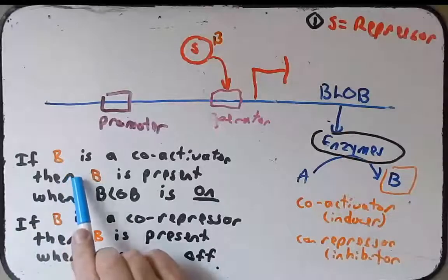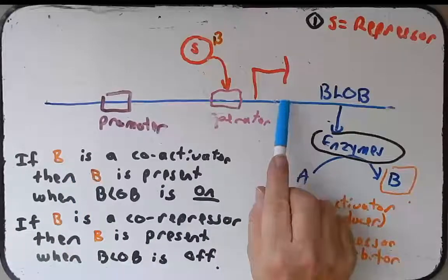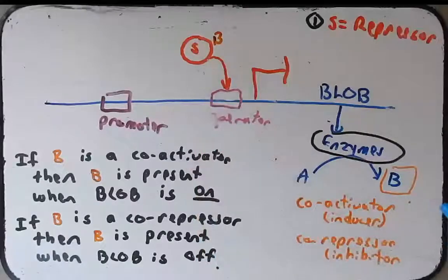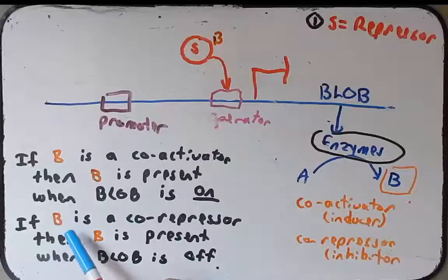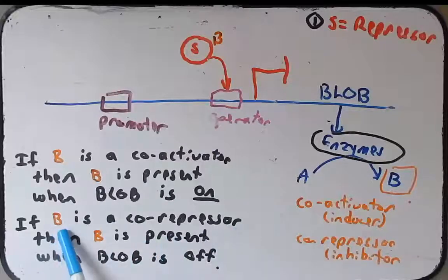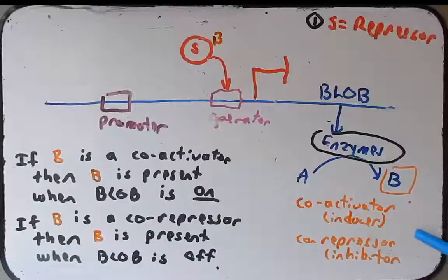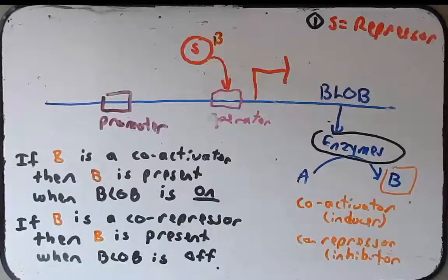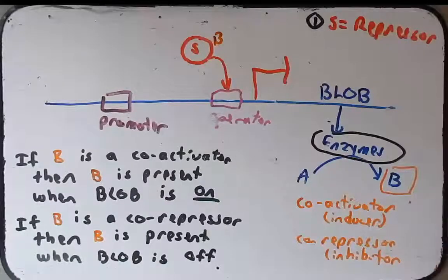If the presence of B activates transcription, then it is a co-activator with S. If B's presence shuts down the expression of the operon, then compound B must be a co-repressor. So let's see what data we can get from the problem to help us determine if it's a co-activator or a co-repressor.